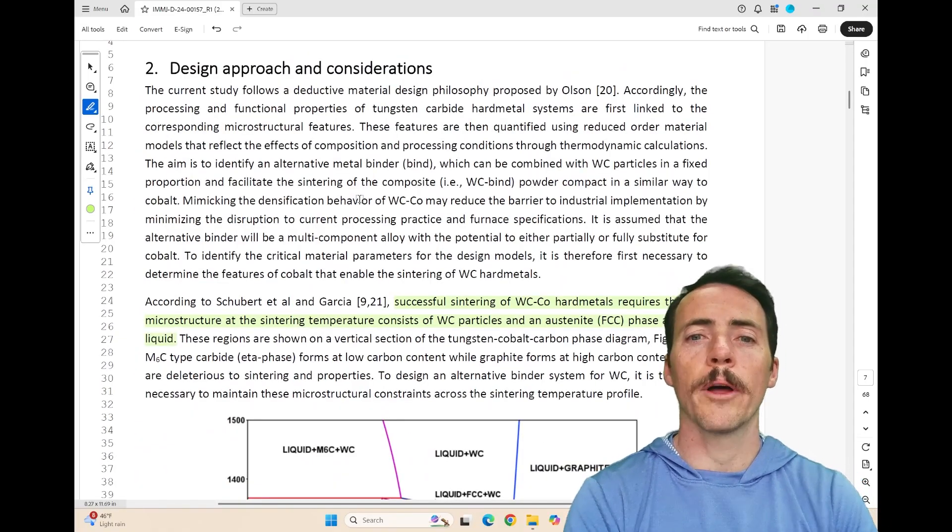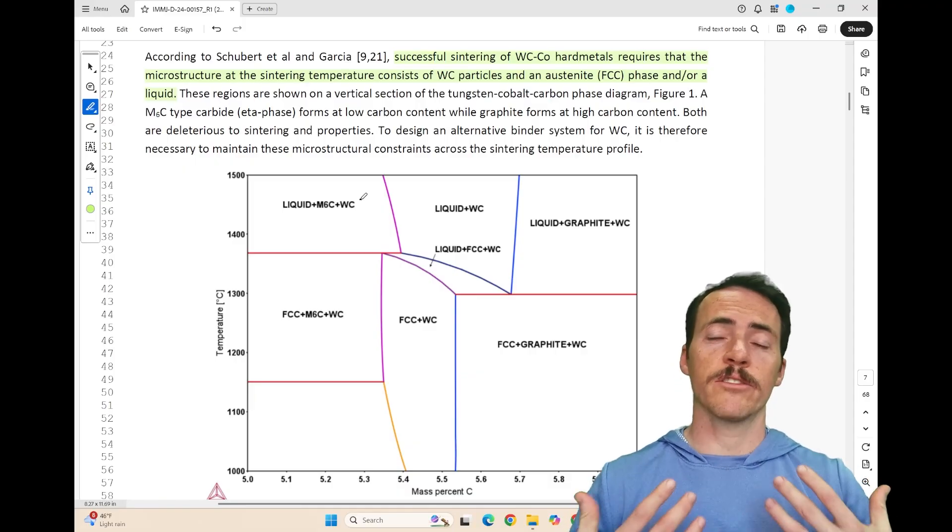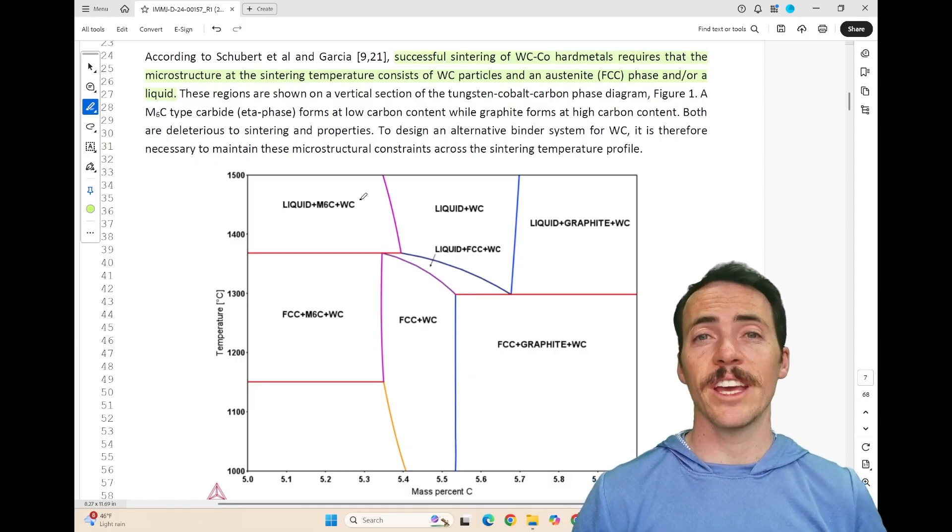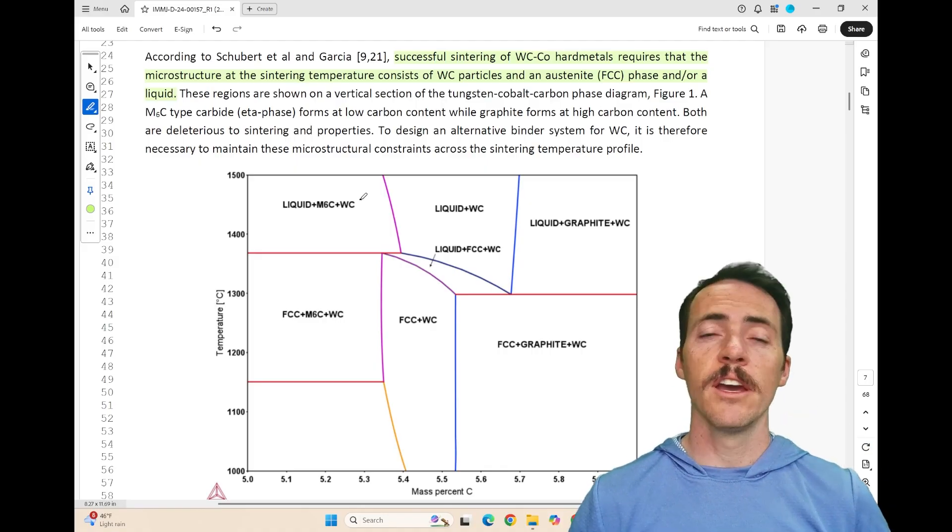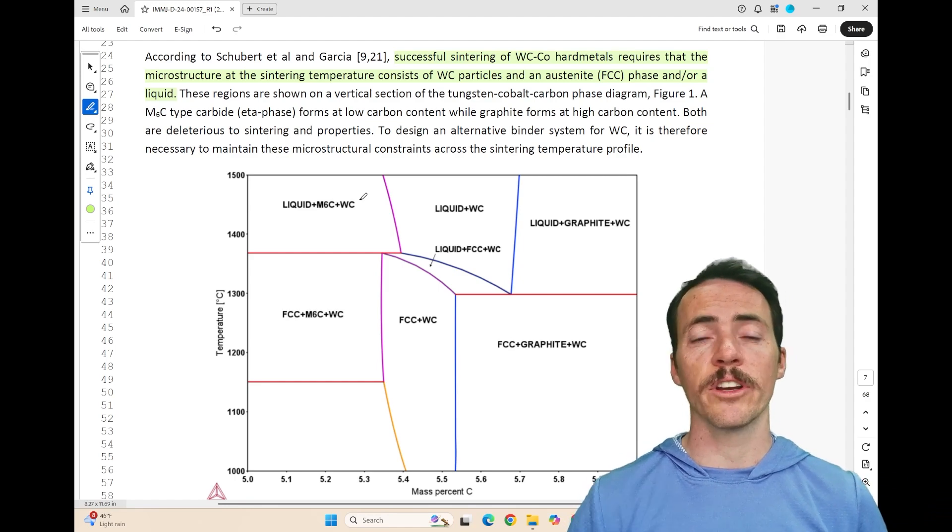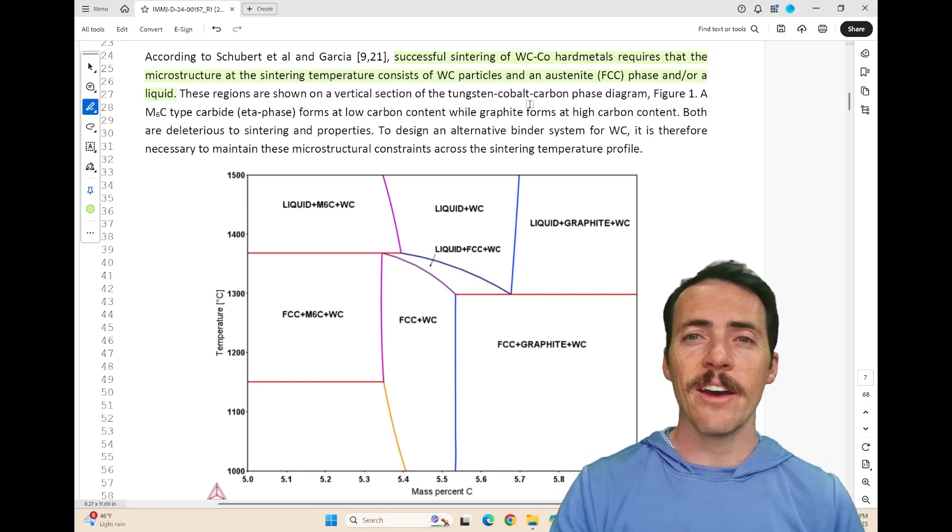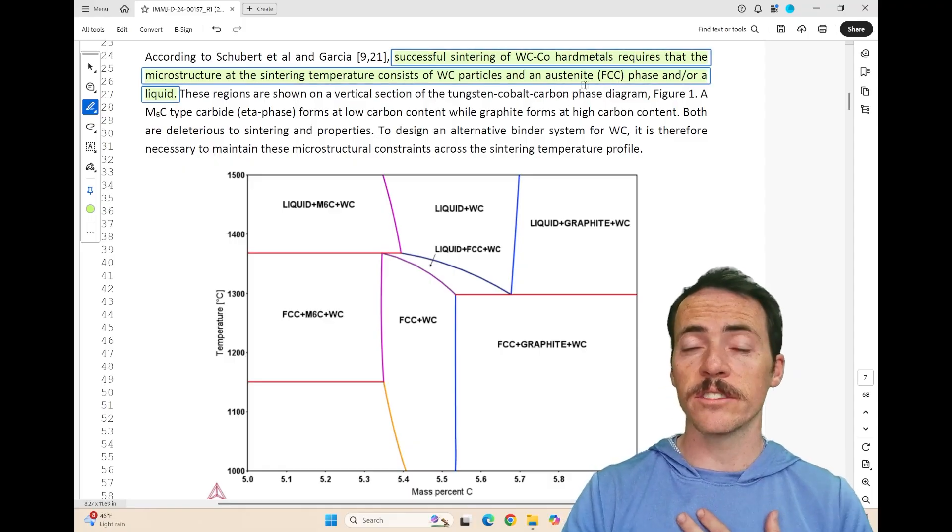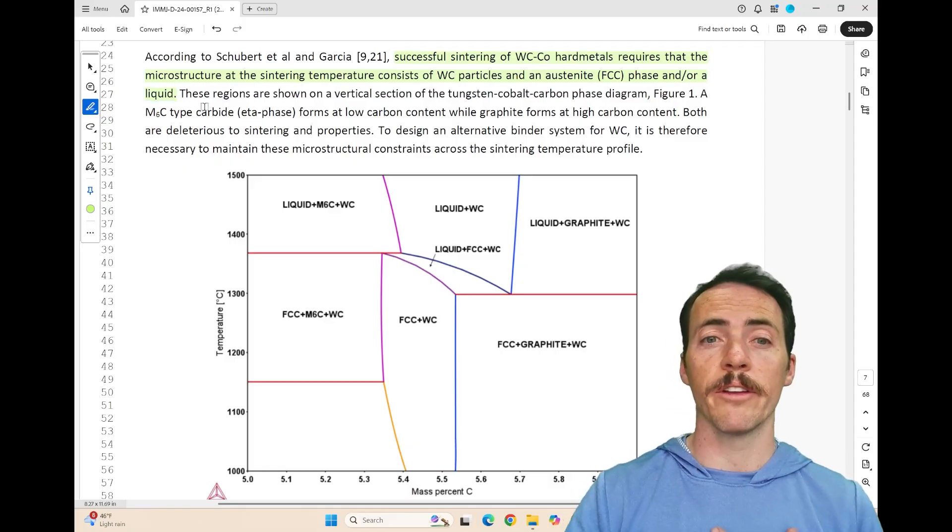So let's talk more about their approach. So how do we account for the processability? Well, as a ceramist myself, I know that oftentimes when you're sintering materials, a little bit of a liquid phase really helps achieve much higher hardness. And not surprisingly, in this work, they talk about that as well. You've got Schubert and Garcia both suggesting that in these tungsten carbide hard metals, having a little bit of this FCC austenite phase or a little bit of liquid or both is really beneficial.